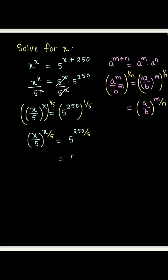The right-hand side is 5 to the power 250 divided by 5, which is 5 to the power 50, which is the same as 5 to the power 2 times 25. That can be written as 5 squared to the power 25, which makes it 25 to the power 25.